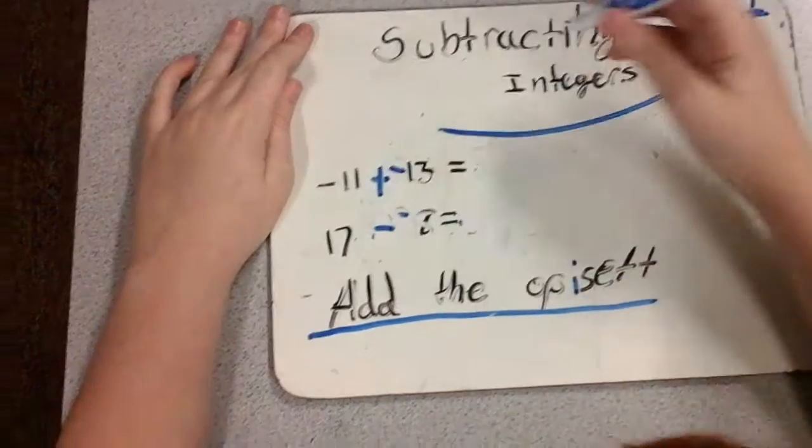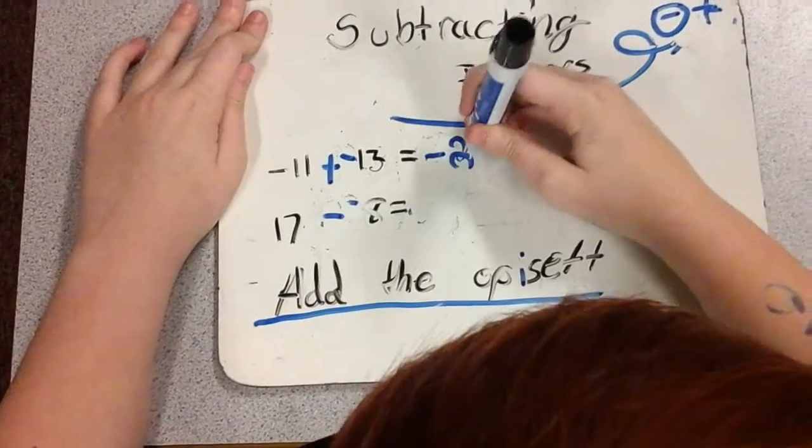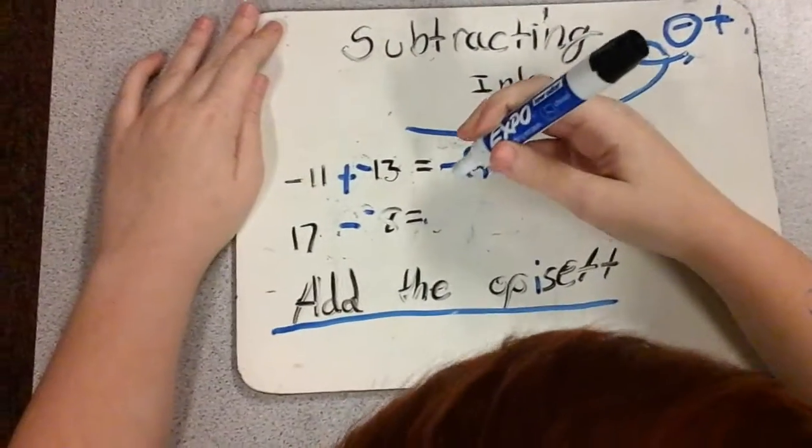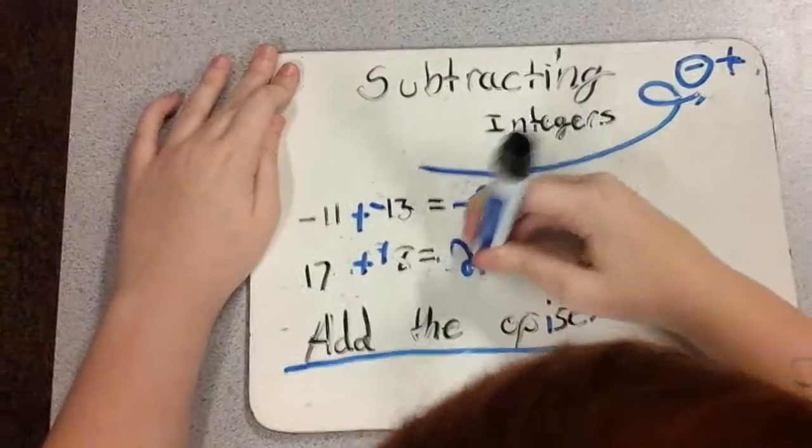So, for example, negative 11 plus negative 13 is negative 24. 17 plus positive 8 is positive 25.